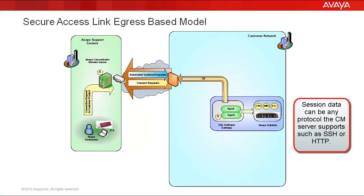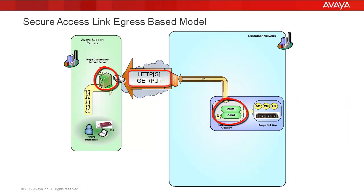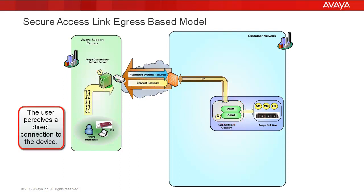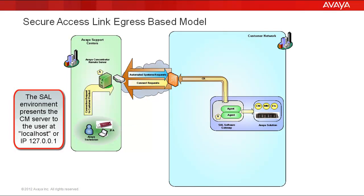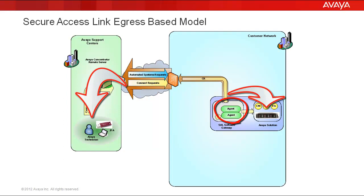This session can be any protocol that the CM server supports — it may be SSH, or perhaps even an HTTP session. At this point, the SAL gateway and concentrator remote server at Avaya are managing this communication over HTTPS using standard HTTP request methods, primarily GET and PUT. The user has the perception that they are conversing directly with the desired system, though this in fact is not occurring. In actuality, the SAL environment presents the CM server as a local host or IP address 127.0.0.1 to the end user. What's really happening is that the gateway is acting as the in-between, managing all bidirectional communication on behalf of the user and the device using a series of HTTP GETs and PUTs.